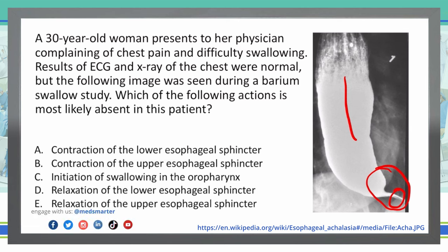Let's go through these answer choices together. A, contraction of the lower esophageal sphincter. We want to know what is absent. If there is no contraction of the lower esophageal sphincter, it would be wide open, the barium would go through with no problem at all — we're not seeing that in this case, so A is not our issue. B, contraction of the upper esophageal sphincter. An absent contraction of the upper esophageal sphincter would still allow the barium to come through and we wouldn't see that bird's beak appearance, so B is not our correct answer.